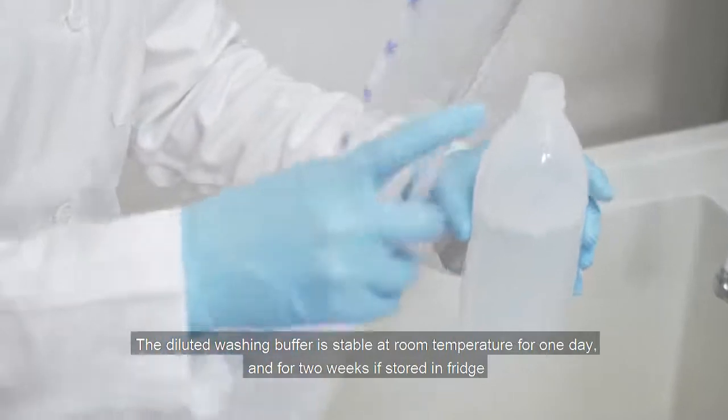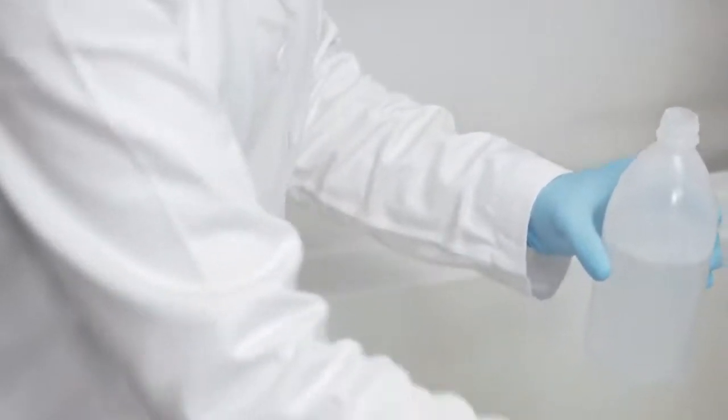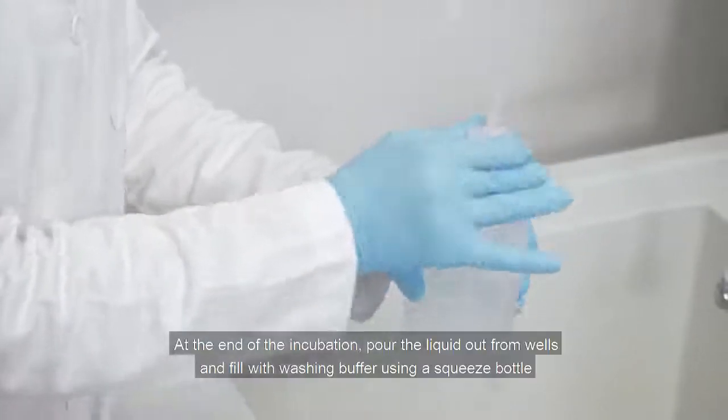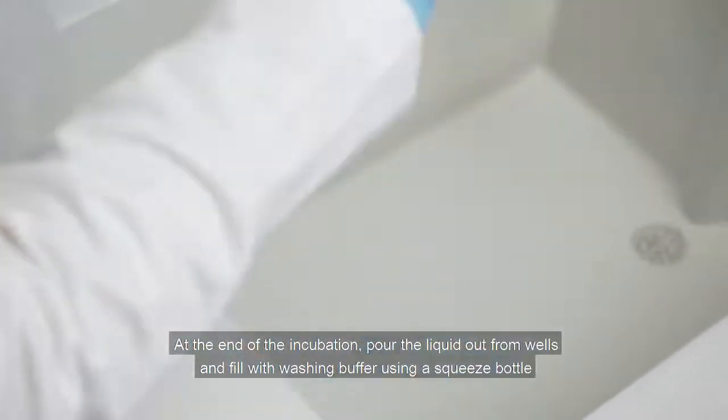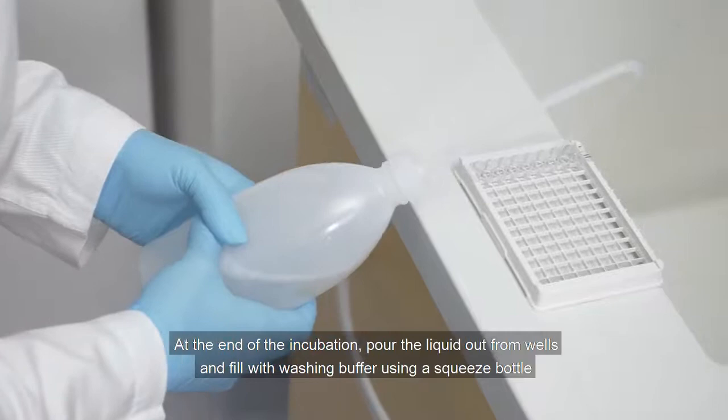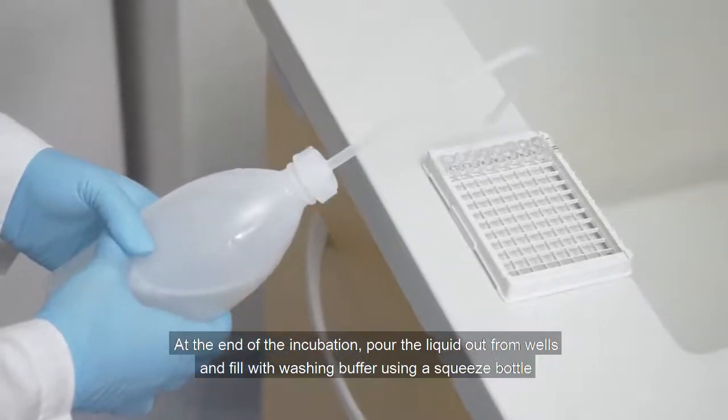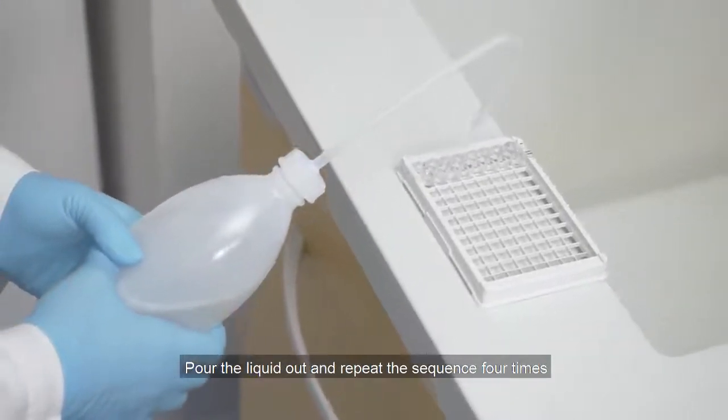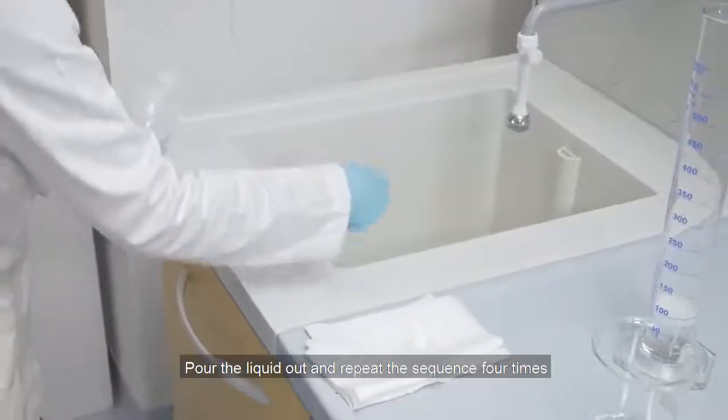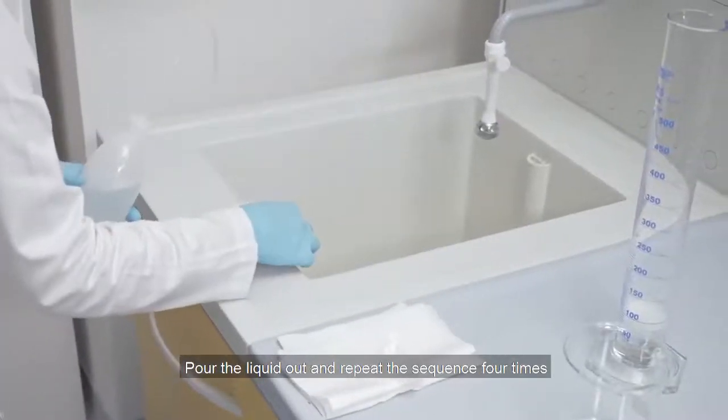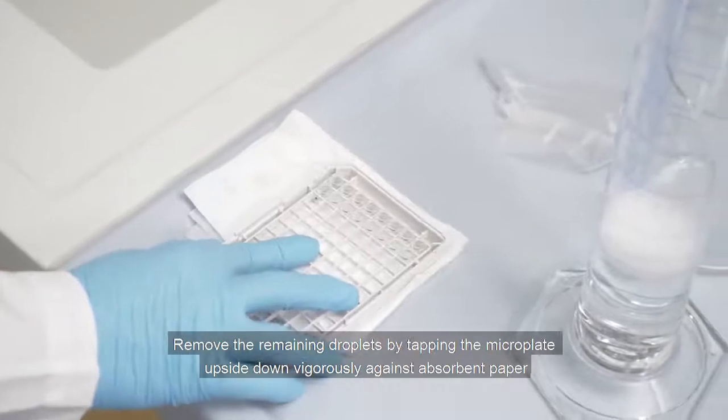At the end of incubation, pour the liquid out from the wells and fill with washing buffer using a squeeze bottle. Pour the liquid out and repeat the sequence four times. Remove the remaining droplets by tapping the microplate upside down vigorously against absorbent paper.